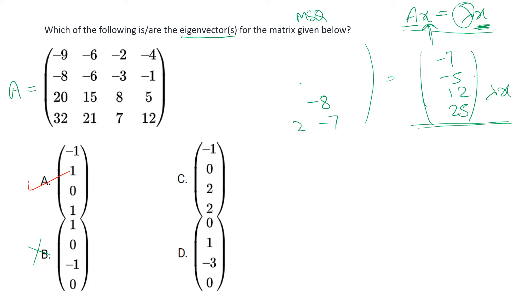Now let us check for the remaining two options. Again we shall be following the same procedure, taking the product of A and x. For option C, our x will be minus one, zero, two, and two.